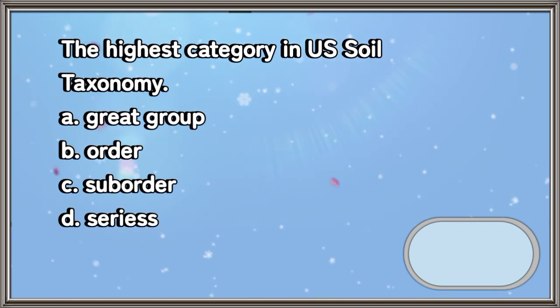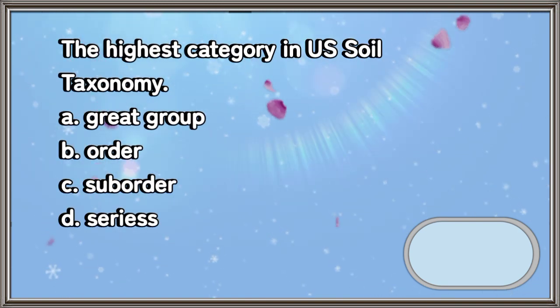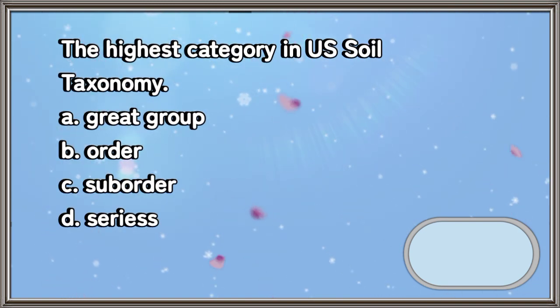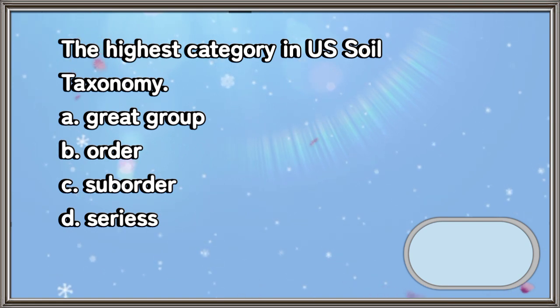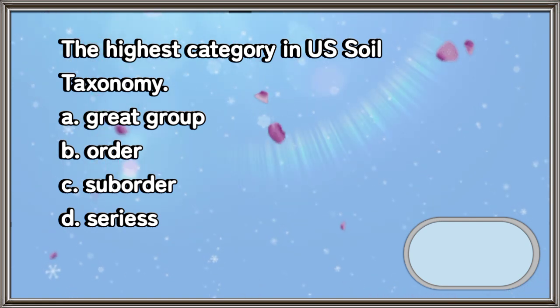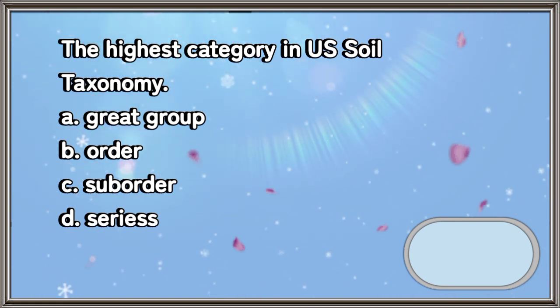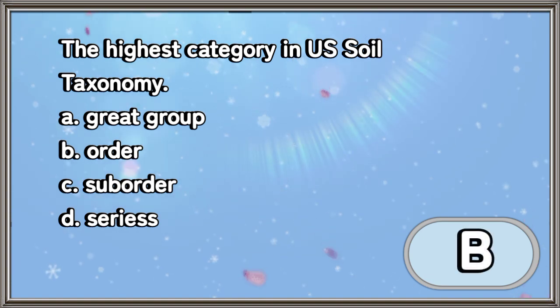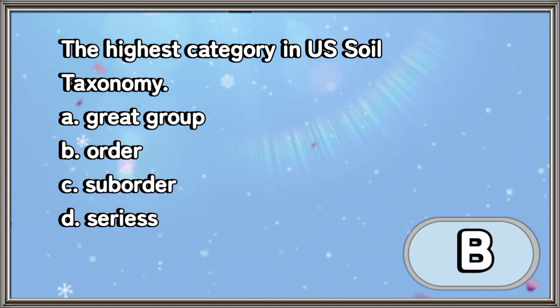The highest category in U.S. soil taxonomy. A. Great group. B. Order. C. Suborder. D. Series. The answer is letter B.